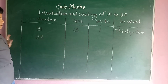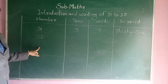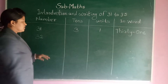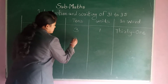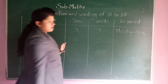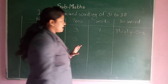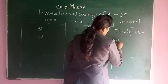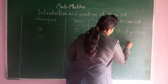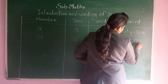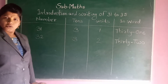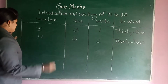Next: 32. So which is tens and which is units? 3 is the tens and 2 is the unit. And how to write in words: t-h-i-r-t-y, 30, and t-w-o — thirty-two.